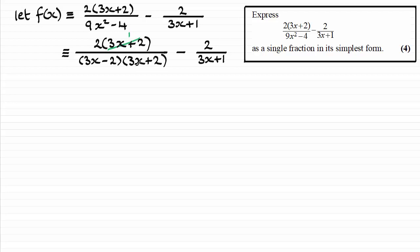So 3x plus 2 into 3x plus 2 goes once and it goes once there. So that leaves us with a simplified fraction here, 2 over 3x minus 2. So copying that out again, we've got this line here.